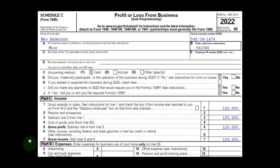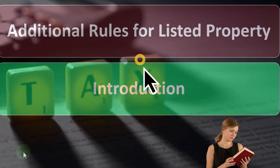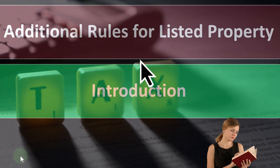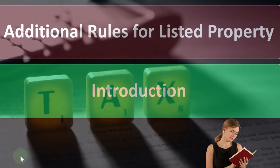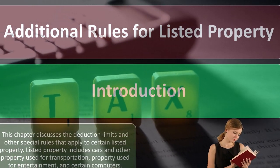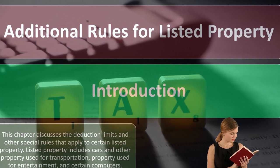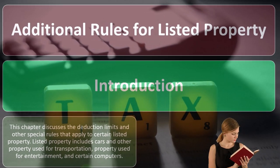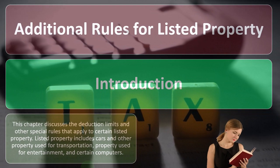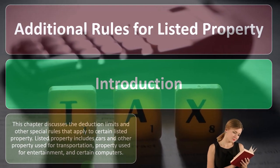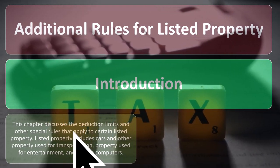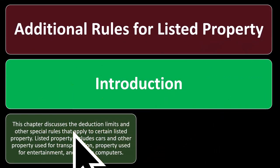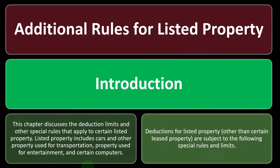Now we're going to go into the special rules — additional rules for listed property. This chapter discusses the deduction limits and other special rules that apply to certain listed property. Listed property includes cars, probably the big one, and other property used for transportation, property used for entertainment, and certain computers.